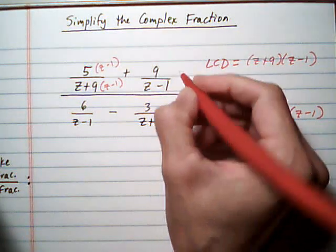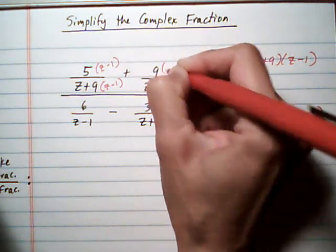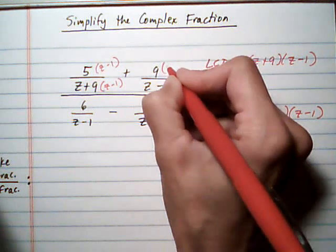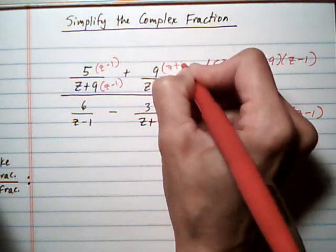The next one here already has z minus 1. It needs the z plus 9, and that's okay to multiply in the bottom, as long as we also multiply it onto the top.